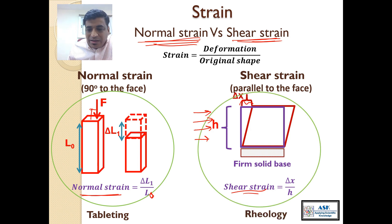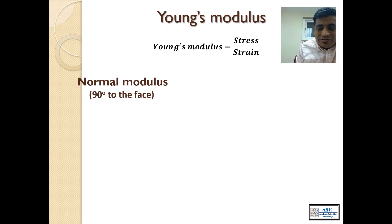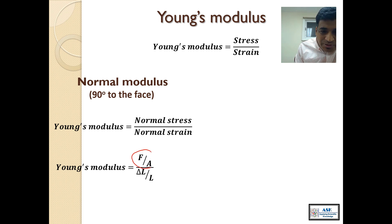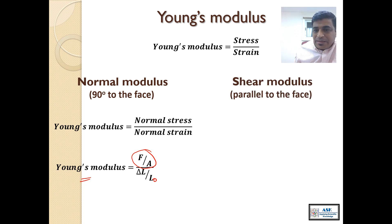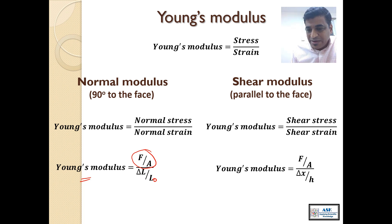Normal strain is used in tableting and shear strain is used in Rheology. Young's modulus is the ratio of stress over strain. Normal modulus is the ratio of normal stress over normal strain — that is, force per unit area divided by delta L over L0. Shear modulus is shear stress over shear strain — shear force per unit area divided by delta x over h.